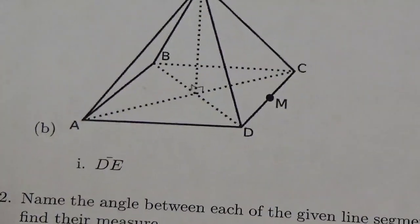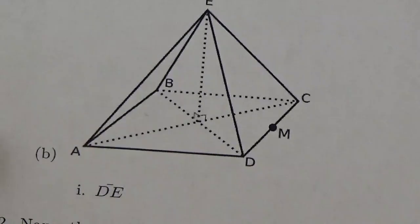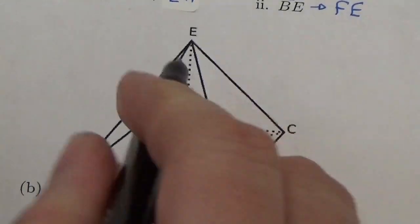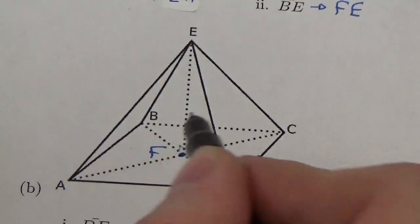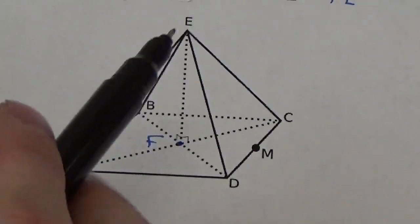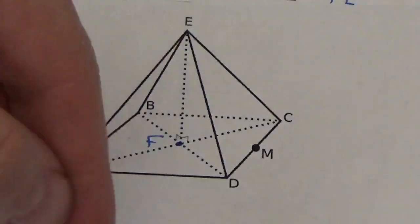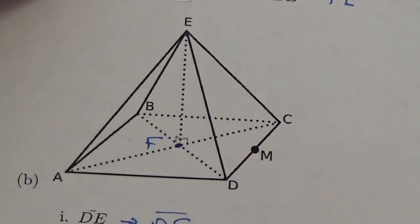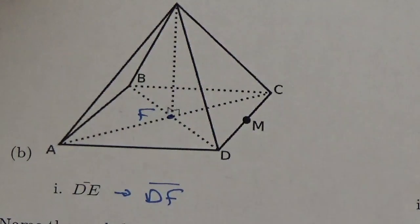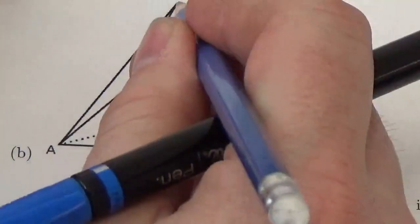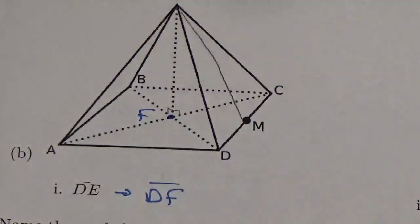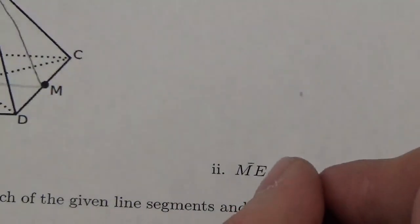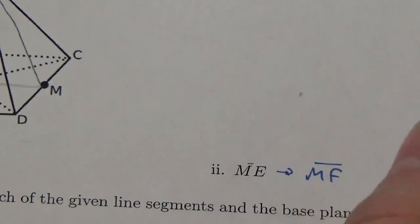For this next shape, the two line segments we're going to project are DE and ME, where E is up at this vertex. The point directly below E — let's call that F. When I project DE onto that base plane, D is on that plane, but E becomes F, so that becomes DF. It's the same thing with ME: M is in that plane and stays untouched, but E becomes F, giving us MF.